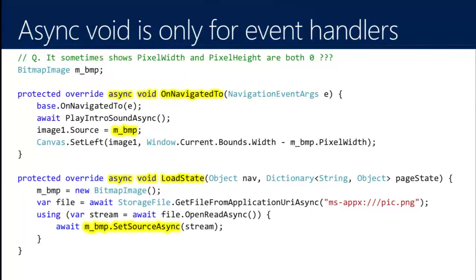Another common case: people initializing things in async void load-state methods, which has been a big issue since Windows 8. 'I'm setting stuff up in load-state, but half the time it works and half the time it doesn't — like my pixel width is sometimes zero inside on-navigated-to.' Tracing through: on-navigated-to was made async void, which is actually fine since it's morally an event handler. But its base implementation calls back into load-state, and when we get to the first await, we immediately return control all the way back to the XAML message pump.